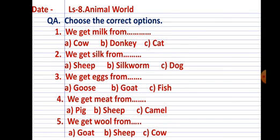Number one: we get milk from... Options given are a) cow, b) donkey, and c) cat. You have to choose correct options. You have to give the answer to your parents or if you want, you can write in your rough book for practice.